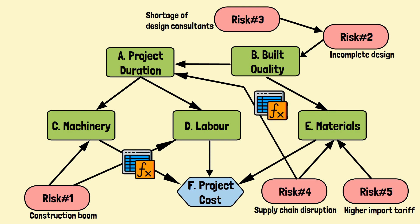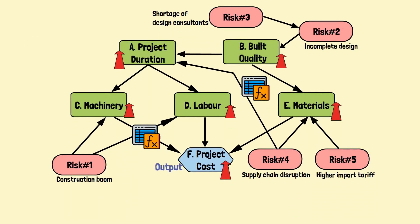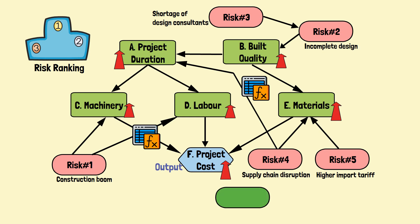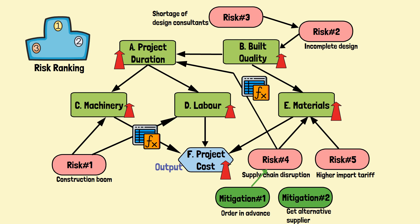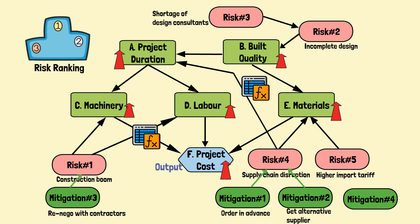Algorithms or formulae can be embedded to propagate the risk impacts through the influence diagram to understand the cost impact. Via quantification of risk impacts, we can rank the risks based on their consequences. We can use the influence diagram to identify the risks and develop mitigation strategies. For example, we can develop a mitigation plan to address the delay in materials availability by ordering materials in advance or finding an alternative supplier, and we can address the increase in costs by negotiating with contractors or looking for more cost-effective solutions.